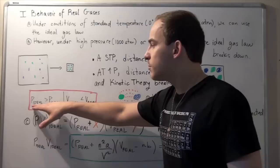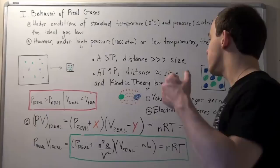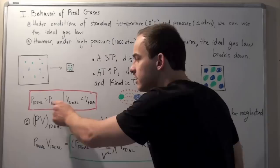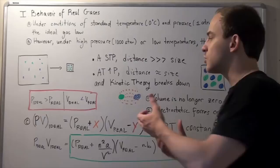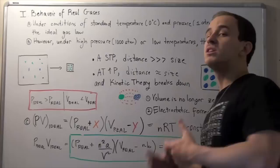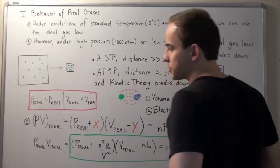Let's compare the pressure of ideal and real systems. For an ideal system, molecules are not feeling electrostatic forces, so they hit the wall of the container without being attracted or repelled by other molecules. For real gases, the pressure is less — when a molecule travels, it's attracted by other molecules, meaning it's pulled back and hits the wall with less force, resulting in a smaller pressure. Therefore, ideal pressure is higher than real pressure.